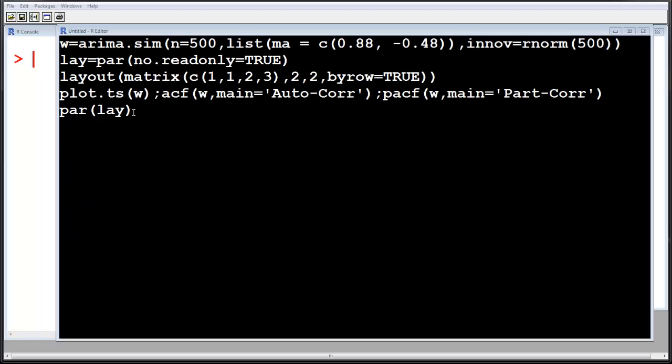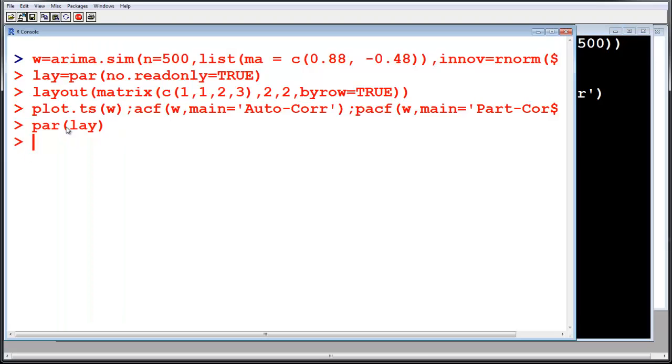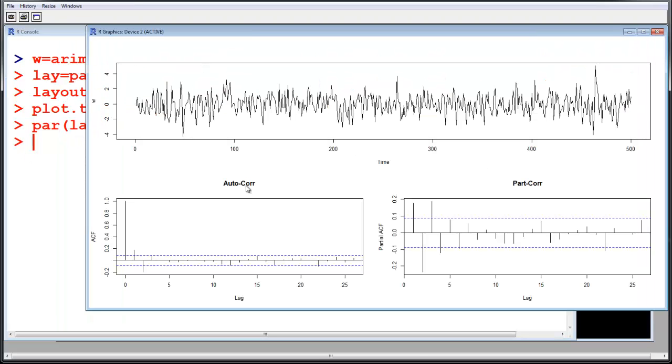So now let us run this in R and see how it looks like. We copy paste the code here and we just plot the time series, autocorrelation function, and partial autocorrelation function. We draw it in a nice layout, so that's why we have a layout matrix and we are trying to do these paragraphs in the layout form. Let us select this all and hit the run button.